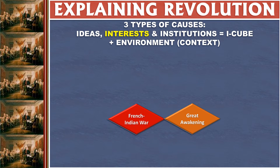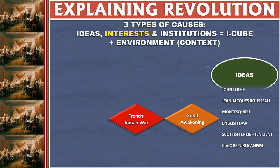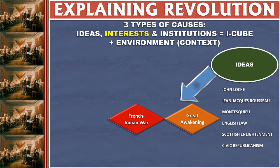So, three types of causes. The first one is ideas. Prior to the American Revolution, several ideas were very important — mostly what you might call Enlightenment ideas. Things that people threw off traditional reasons and traditional government, things that they would maybe describe as modern or enlightened.